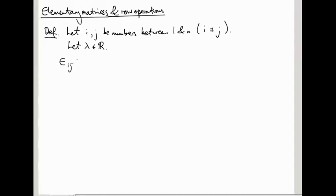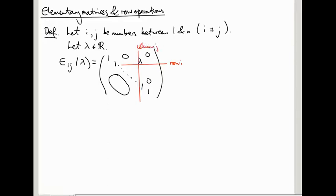Then the elementary matrix E_ij(λ) is defined to be the matrix which has 1s on the diagonal, and everything else is 0, except one entry in the i,j-th position. This lambda lives on row i and column j.